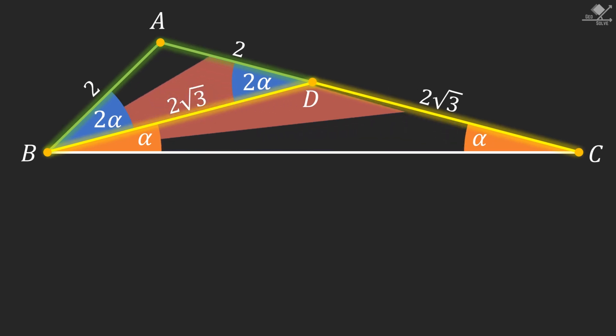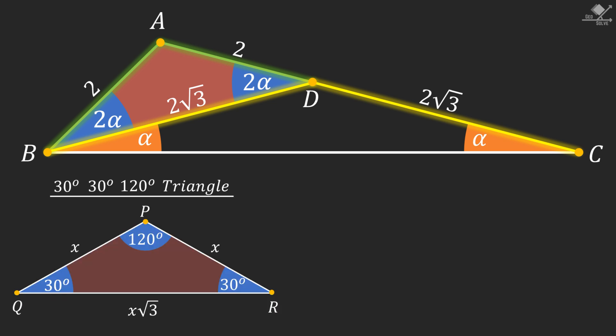Once again focus on this triangle. One can recognize this special triangle as 30-30-120 degree triangle by just looking at the side lengths. From here we can say that 2 alpha is equal to 30 degrees. And alpha is 15 degrees.